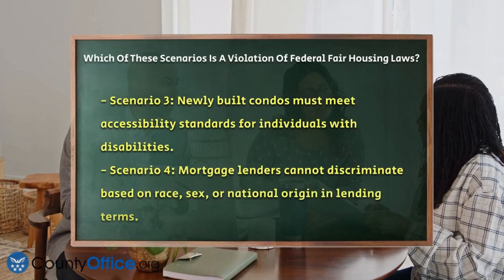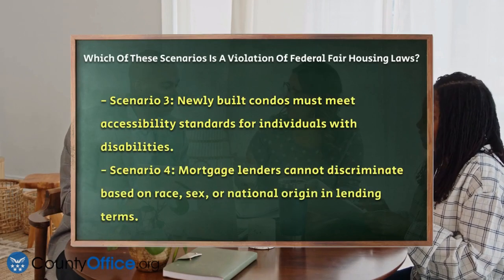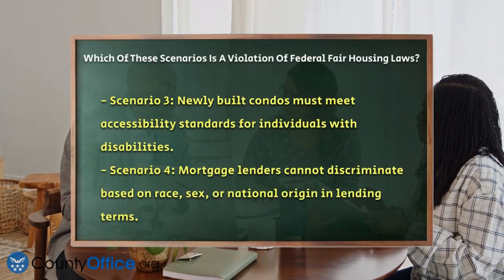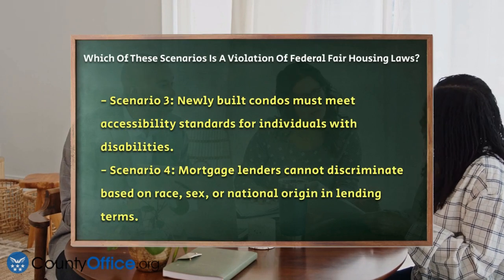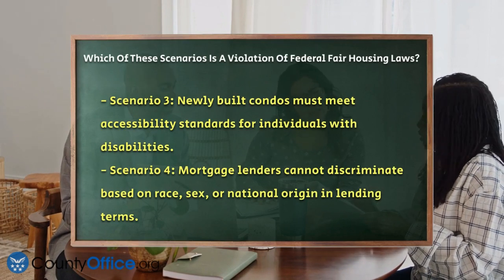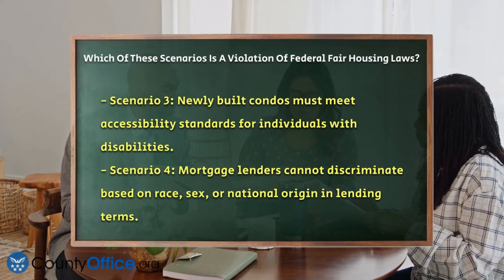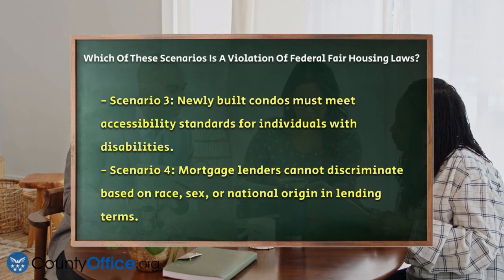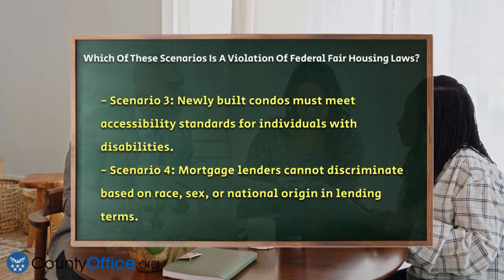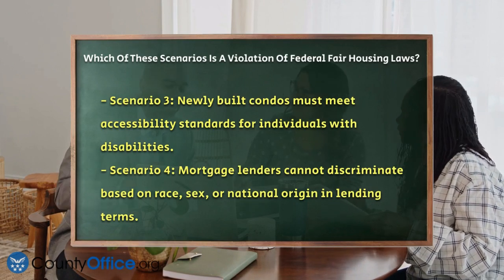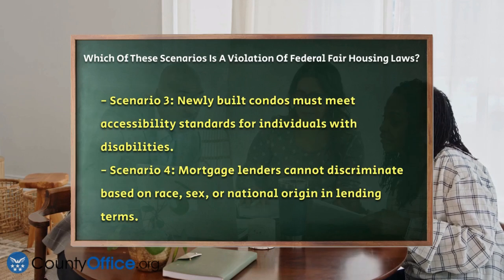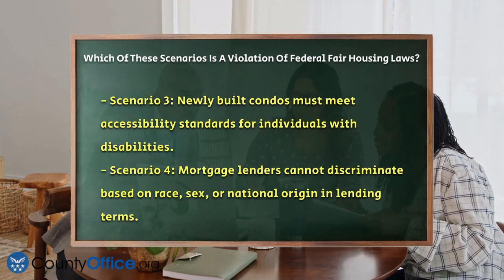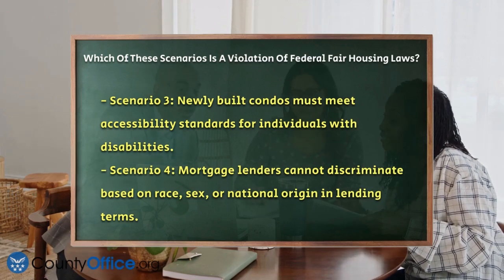Scenario 2: Refusing to show. If a real estate agent refuses to show a home to a buyer based on their race, religion, or ethnicity, this is a direct violation of the Fair Housing Act. Similarly, if an agent directs a buyer to a different neighborhood based on discriminatory reasons, it's also against the law.